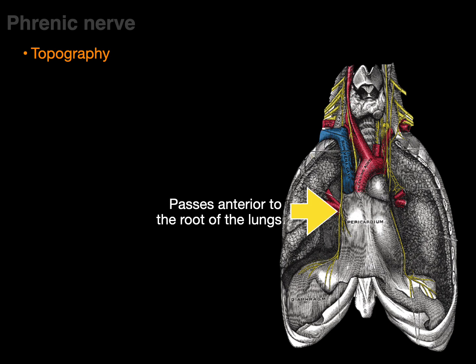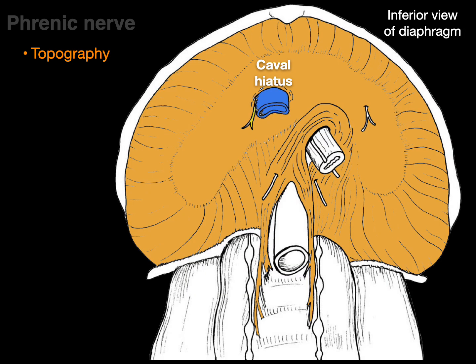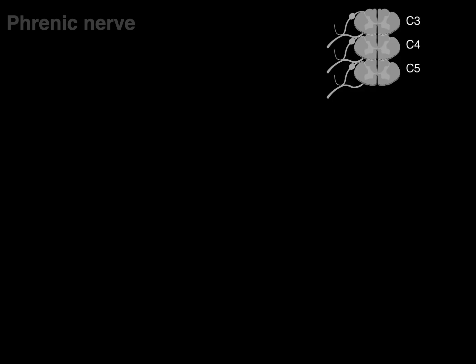As it descends in the thorax, it passes anterior to the root of the lungs and provides innervation to both hemidiaphragms bilaterally. It also pierces the diaphragm — on the right it goes through the caval hiatus with the inferior vena cava, and on the left, the left phrenic nerve pierces the central tendon of the diaphragm.